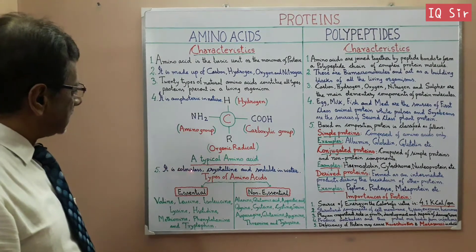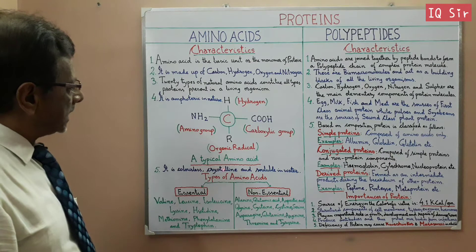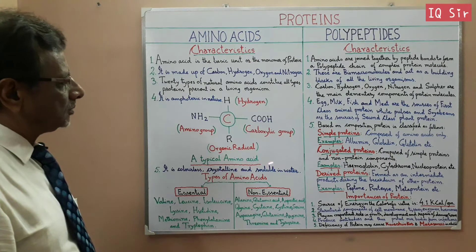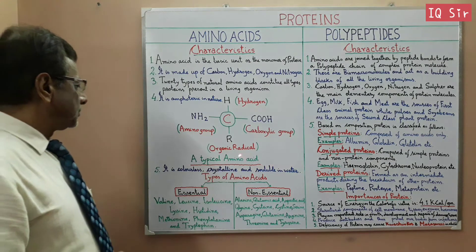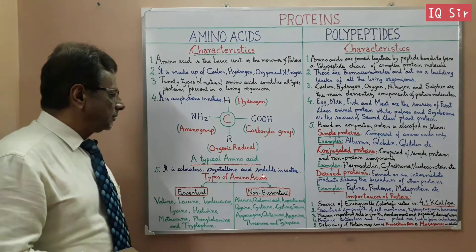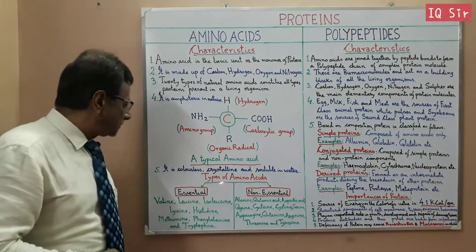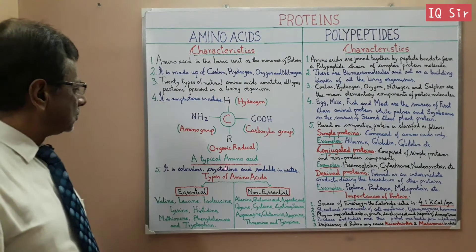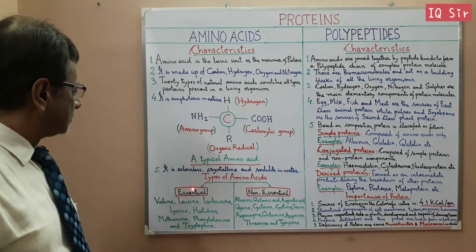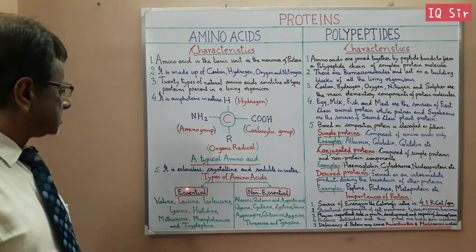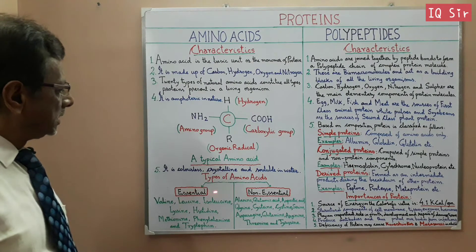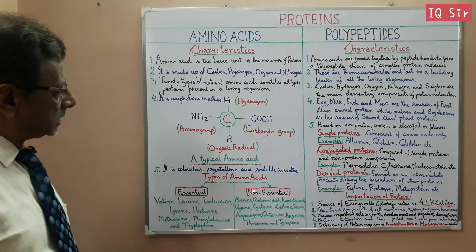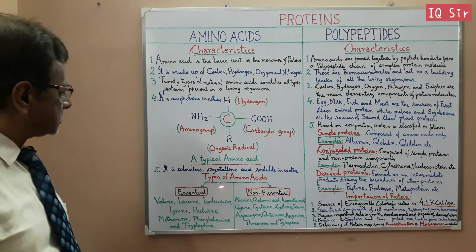Lastly, it is colorless, crystalline and soluble in water. Now we come to the types of Amino Acids. There are two main types of Amino Acids: one is essential and the other is non-essential.